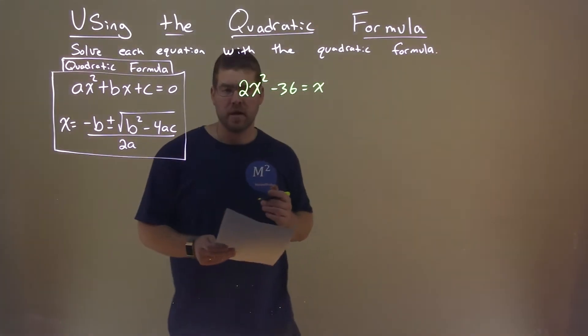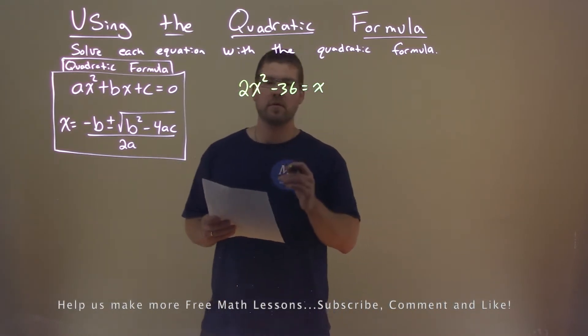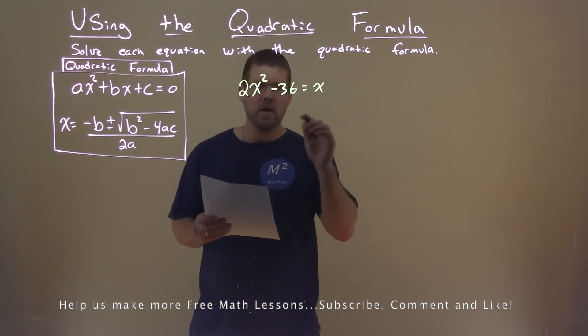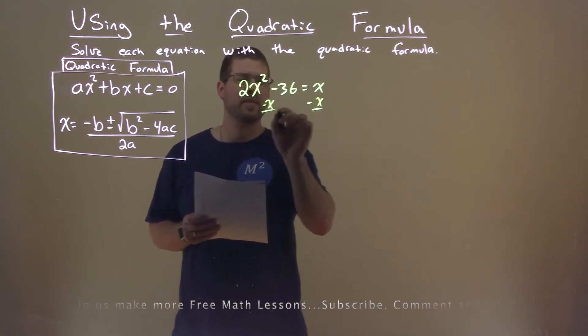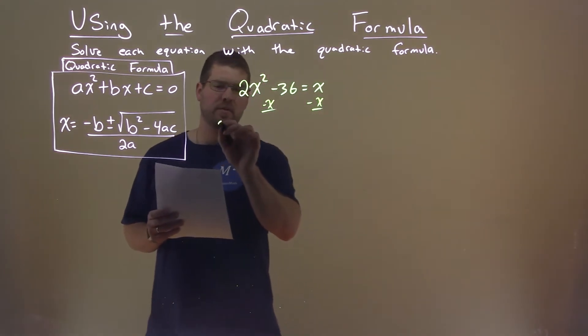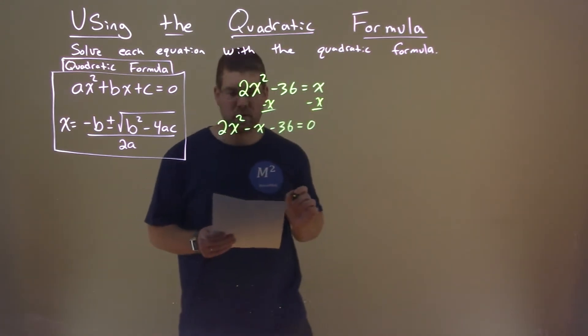We're given this problem right here: 2x squared minus 36 equals x, and we want to solve using the quadratic formula. So first step I need to do is subtract an x to both sides. I had to have my equation equal to zero, so we have 2x squared minus x minus 36 equals zero here.